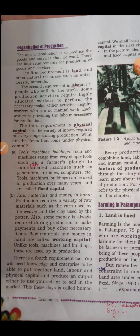The second requirement is labor — people who will do the work. Some production activities require both physically strong people and mentally strong people. So in this section, physical labor is required, and also labor having technical knowledge and skills.